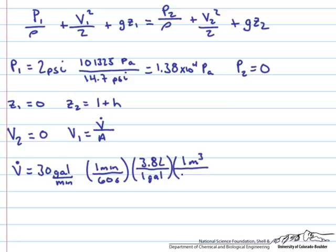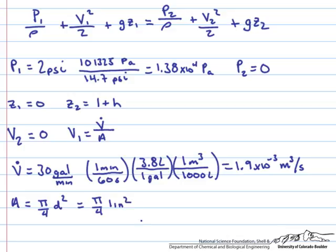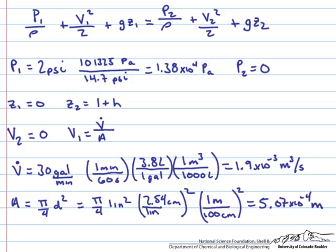If we go through and plug those numbers in, we'll get that the volumetric flow rate is 1.9 times 10 to the minus 3 meters cubed per second. The area of the pipe is equal to pi over 4 times the diameter squared. The diameter is 1 inch, so it's pi over 4 times 1 inch squared. We'll convert this to meters squared. In 1 inch there's 2.54 centimeters, and this needs to be squared. In 1 meter there is 100 centimeters, and this number also has to be squared. If we run through this calculation, the area is equal to 5.07 times 10 to the minus 4 meters squared.